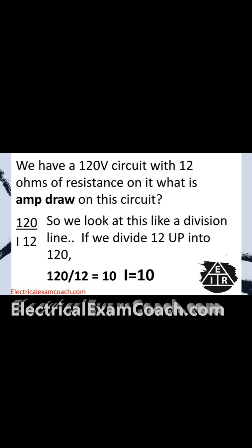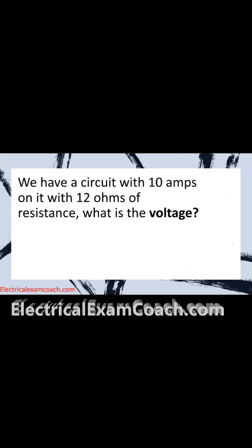If it's way low or way high, we know there's a problem. Finally, we have a circuit with 10 amps and 12 ohms of resistance — what is the voltage? We plug in what we know. In this case we're solving for E, and we know we have 10 amps and 12 ohms.